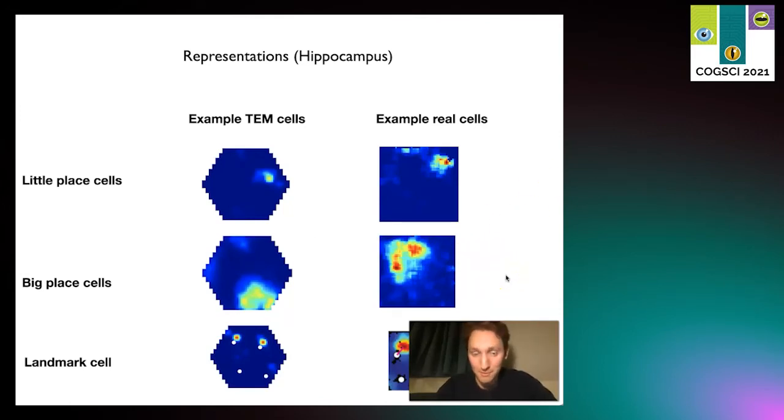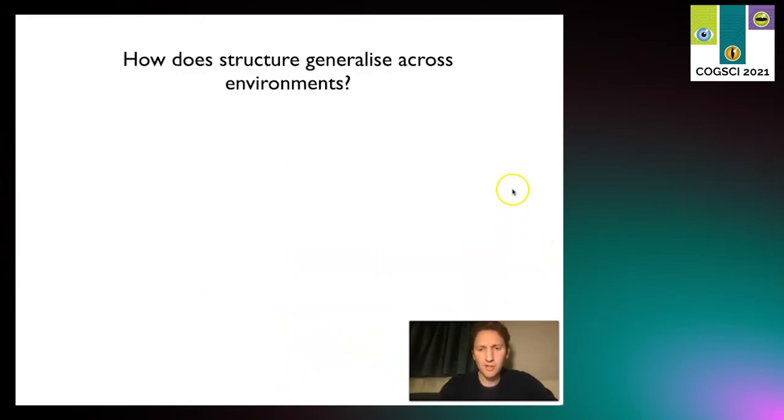If we have a look in the equivalent of this machine's hippocampus, we see things that look like place cells - small ones, big ones - just like the brain has small place cells and big place cells. You also see things that look like landmark cells, just like in the brain.